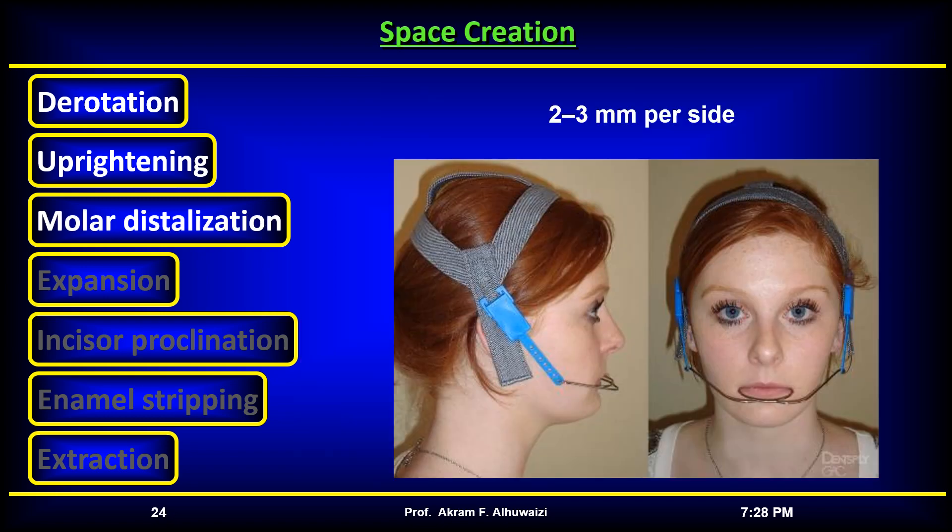Distal movement of the molars in the upper arch can be achieved with headgear. Extraoral traction using headgear will produce up to 2–3 mm per side, meaning a total of 4–6 mm of total arch length. This can be useful in mild cases of crowding where extractions are not indicated, or in severe cases of crowding in addition to extractions.